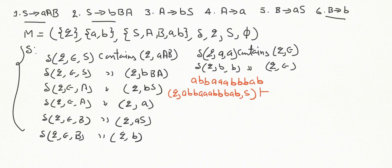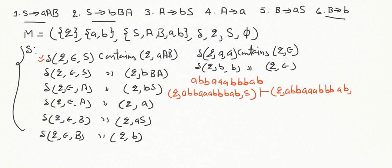For the first move, without reading anything, we apply the first production rule replacing S. The next ID becomes: (q, abbbaaa bbbbbabb bab, AAB). Now the current input pointer is on 'a' and the top of the stack also contains 'a', so we apply the terminal rule δ(q, a, a) → (q, ε) to remove 'a' from the stack.